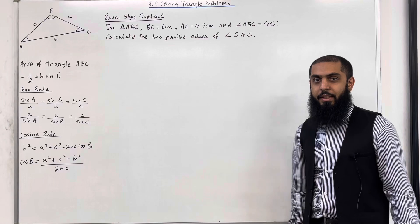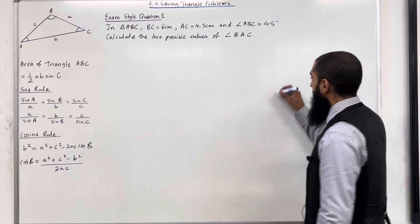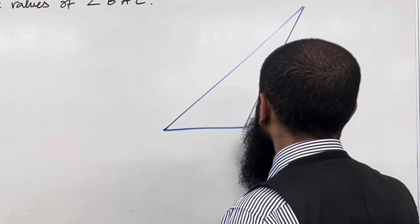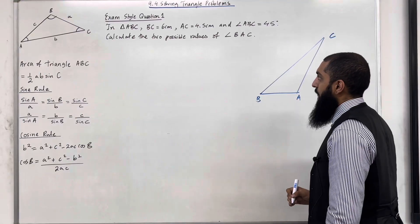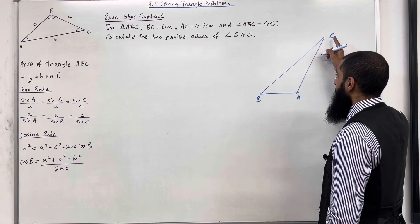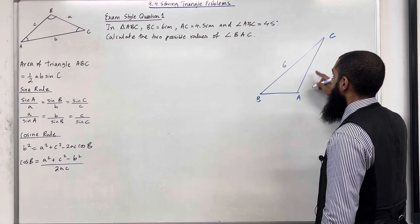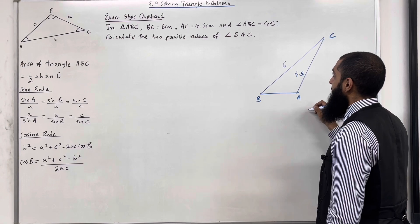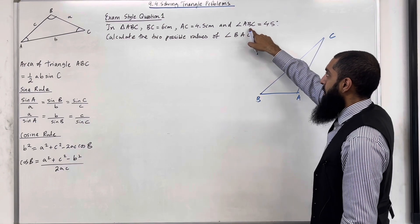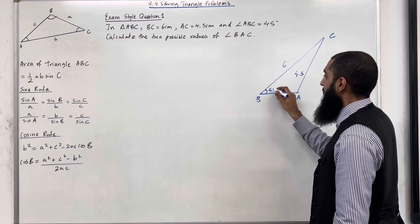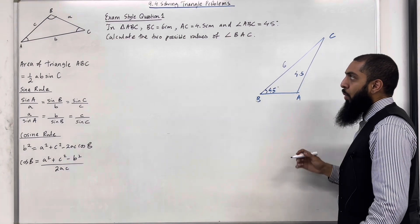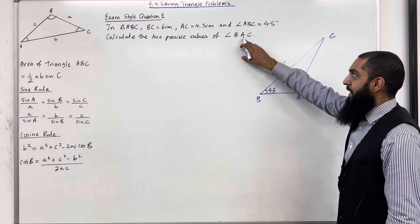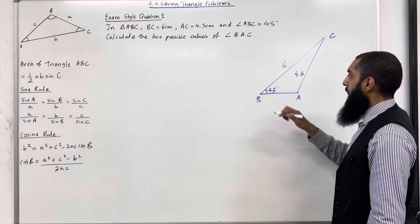I'm going to start by drawing the triangle ABC. In the question, we are told that BC equals 6 cm, AC equals 4.5 cm, and angle ABC equals 45 degrees — looking at the middle letter B, so angle B is 45 degrees. We need to calculate the two possible values of angle BAC. The middle letter is A, so angle BAC is angle A.